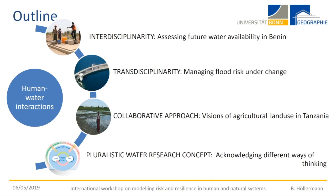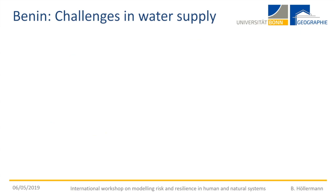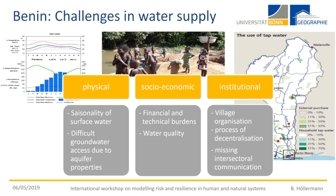The new challenge in water supply has three pillars. The physical part includes seasonality of surface water due to dry and rainy seasons, and difficult access to groundwater due to aquifer properties. The socio-economic part covers financial and technical burdens to access water, maintenance problems, and water quality issues. The third is the institutional pillar — village organization, the decentralization process from about ten years ago, and missing intersectoral communication.